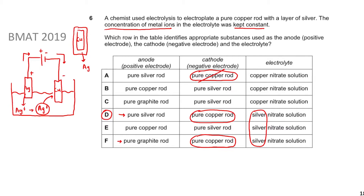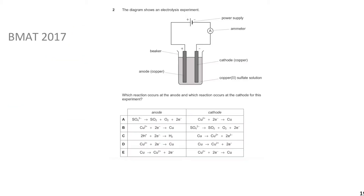Welcome back. Previously we looked at BMAT 2019 Question 6, our first electrolysis question - quite a difficult one to start with. Now we move on to the next question: BMAT 2017 Question 2. There's a diagram showing an electrolysis experiment similar to before, but with an ammeter which measures current - how many electrons pass a point in a given time. Which reaction occurs at the anode and which at the cathode?